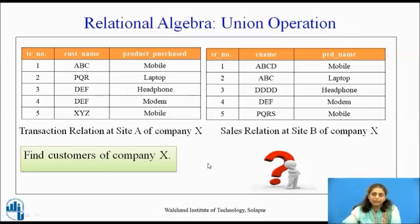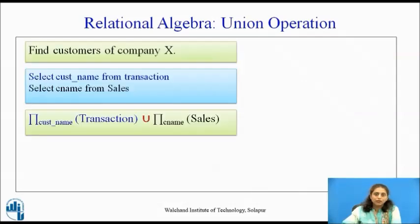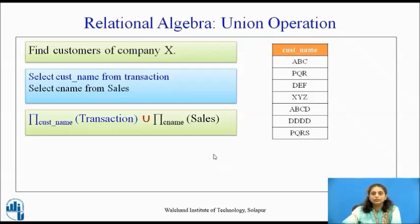Consider one more example. Company X runs at two sites: site A with a transaction relation and site B with a sales relation. We want to find the customers of company X, so we perform a union operation. First, we verify compatibility — both have the same number of attributes and matching attribute domains. The sub-queries are: select customer_name from transaction at site A, and select CN_name from sales at site B. The equivalent relational algebra: project customer_name from transaction UNION project CN_name from sales. Duplicates are removed, giving all customers of company X.